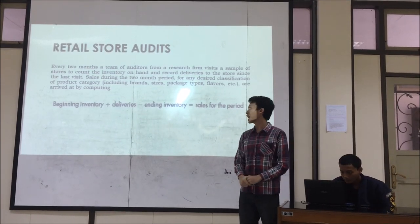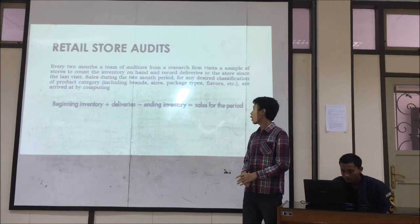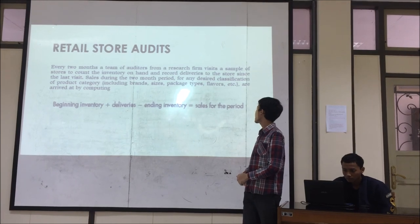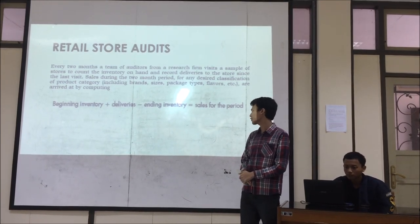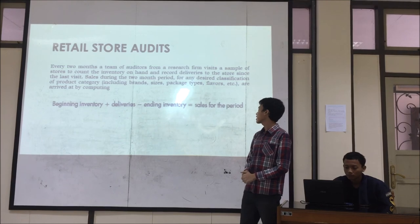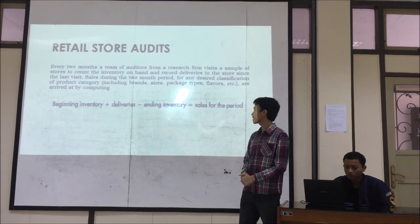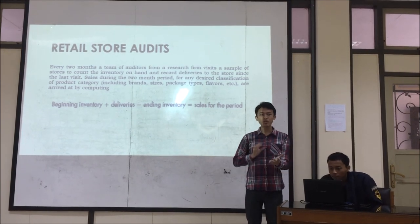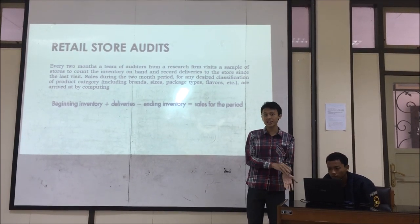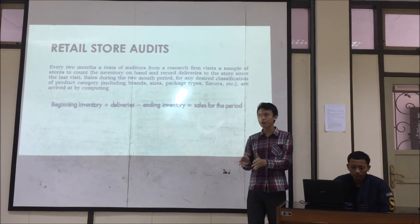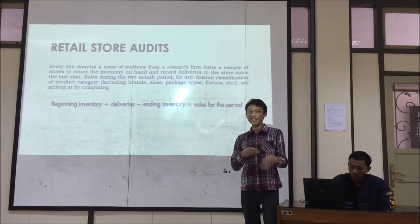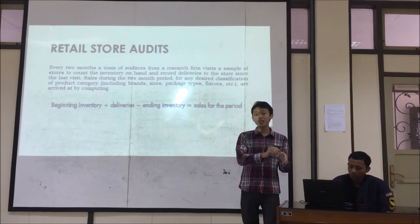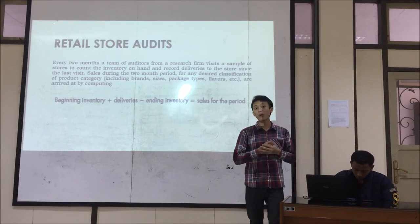The first tool is retail store audits. Every two months, a team of auditors from a research firm visits a sample of stores to count the inventory on hand and record the deliveries to the store since the last visit. As a company, we want to get information from the retailers, so we ask a third party — the research firm — and they send auditors to the retailers to get the information we need.